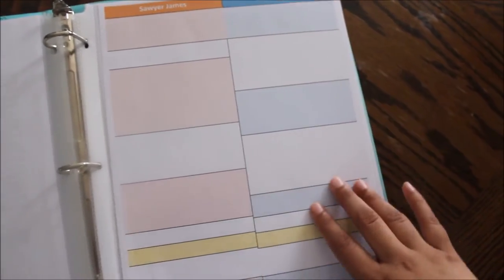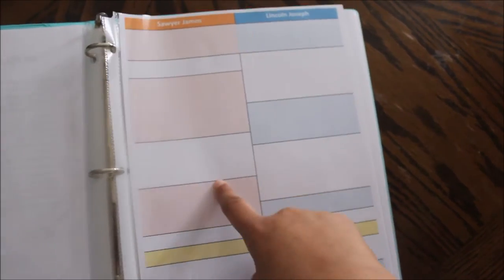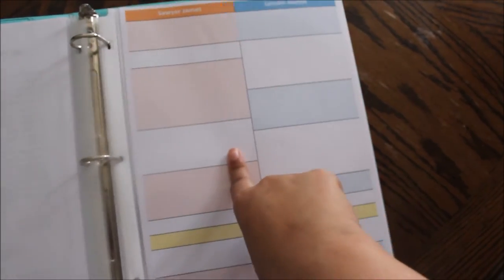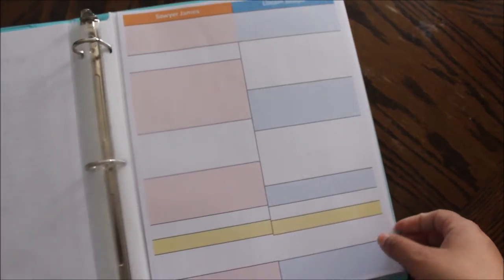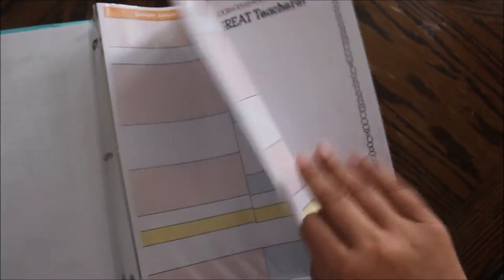Now we have lesson plan. Lincoln's isn't going to be filled out at all. So it's more of Sawyer's what we plan to do and then notes afterwards on how the lesson went. So I have a couple of pages of those. This will last probably about a month.